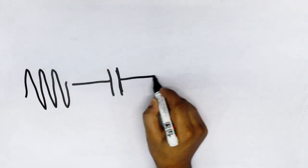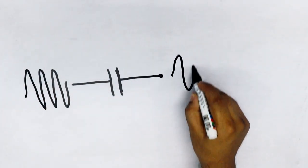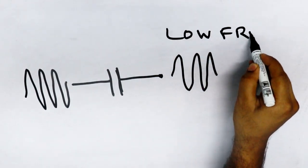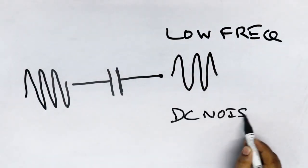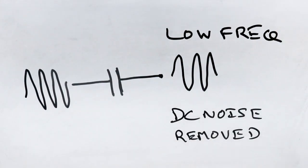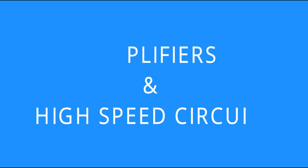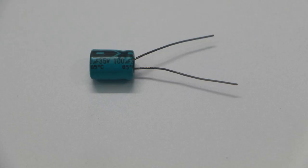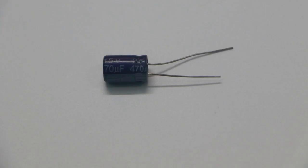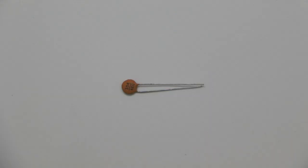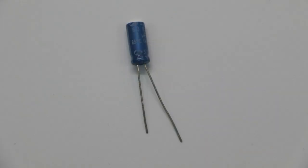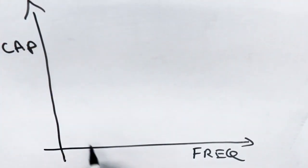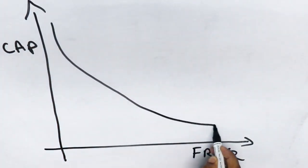A coupling capacitor, on the other hand, should be added in the path of a signal. This will eliminate low frequency or DC noise from the signal. This is widely used in amplifiers and high-speed circuits. The value of a capacitor depends on the frequency we need to allow — capacitance value decreases as the allowed frequency goes up.